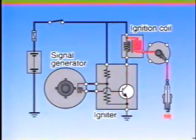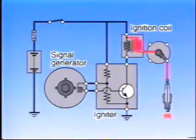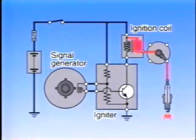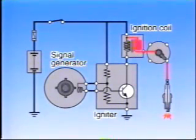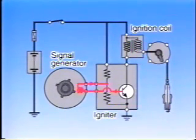When the signal rotor tooth is aligned with the pickup coil, the voltage generated in the pickup coil decreases and the transistor is turned off. This cuts off the primary current and generates a high voltage in the secondary coil. The transistor is also turned off when the voltage is generated in the opposite direction in the coil.